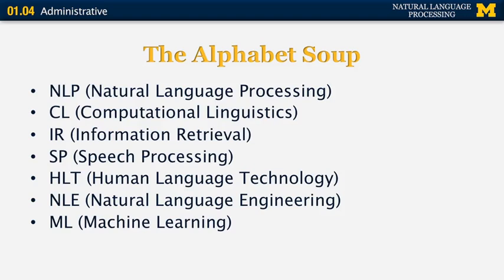There are other acronyms you will hear often. Information retrieval is the study of finding information in documents, whether in text, spoken form, or videos. Speech processing deals with understanding and generation of spoken signals. Human language technology is used for the applied component of NLP, and natural language engineering is mostly synonymous with it. Finally, ML stands for machine learning, which is the computational statistical study of learning.